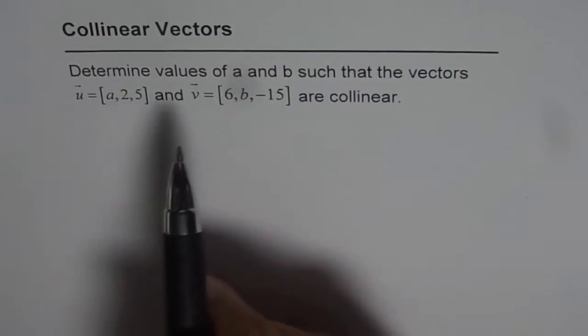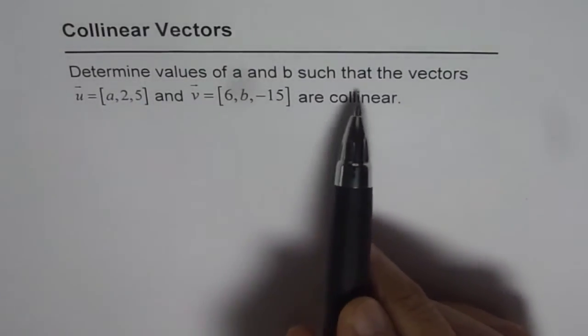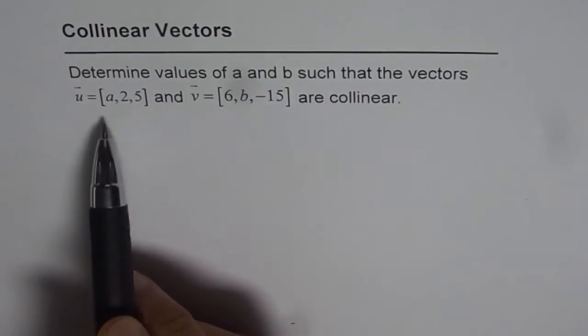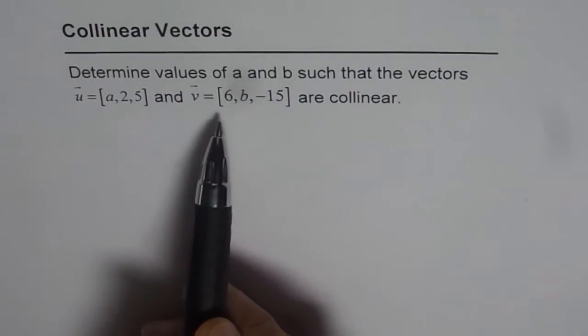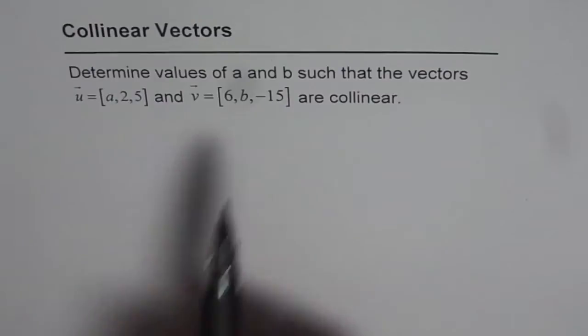Collinear vectors. Determine the values of a and b such that the vectors u = [a, 2, 5] and v = [6, b, -15] are collinear.